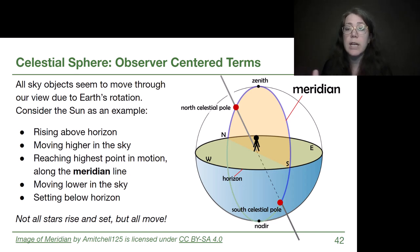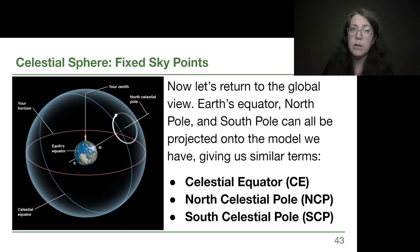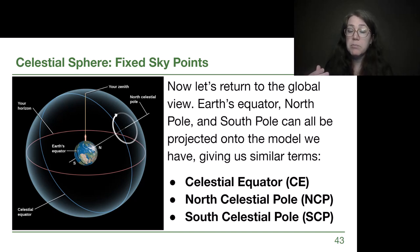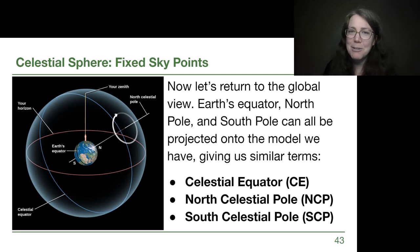Even stars that do not ever get above our horizon are doing this same motion — we just never get to see any of it. The other terms we need have nothing to do with a particular observer; they are true for everyone on Earth. They are fixed sky points we can identify on a star chart. The celestial equator is Earth's equator projected into space. The north celestial pole is the north pole projected into space. And the south celestial pole is, you guessed it, the south pole projected into space. A diagram from our textbook shows all three of those together.